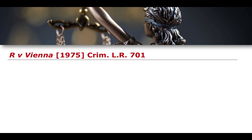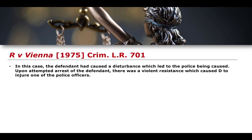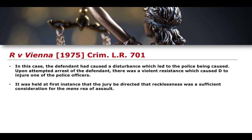Let's talk about a basic case from 1975 that illustrates this point: the case of Crown versus Venna. In this case the defendant had caused a disturbance which led to the police being called. Upon attempted arrest of the defendant there was violent resistance, which caused the defendant to injure one of the police officers. It was held at first instance that recklessness in terms of the mens rea for assault was established by this case; the jury was directed that recklessness was a sufficient consideration for the mens rea of assault.